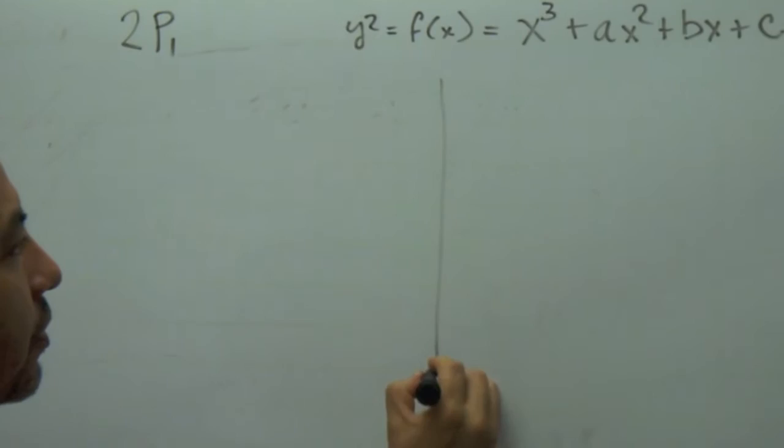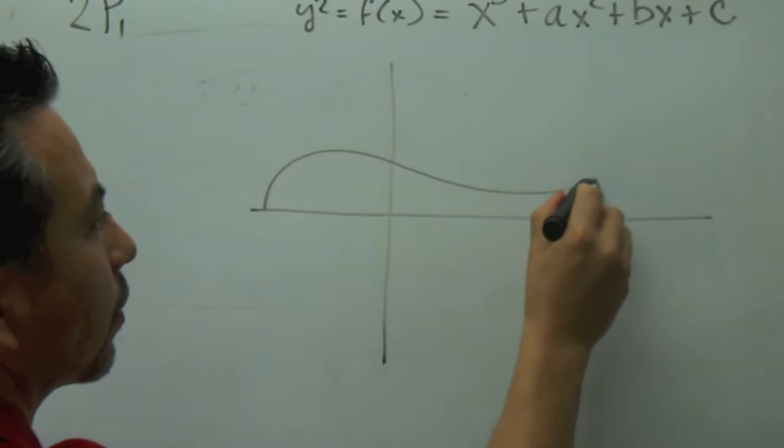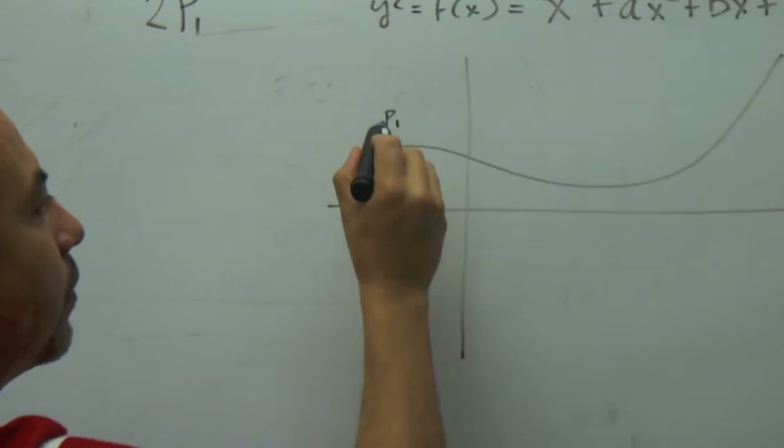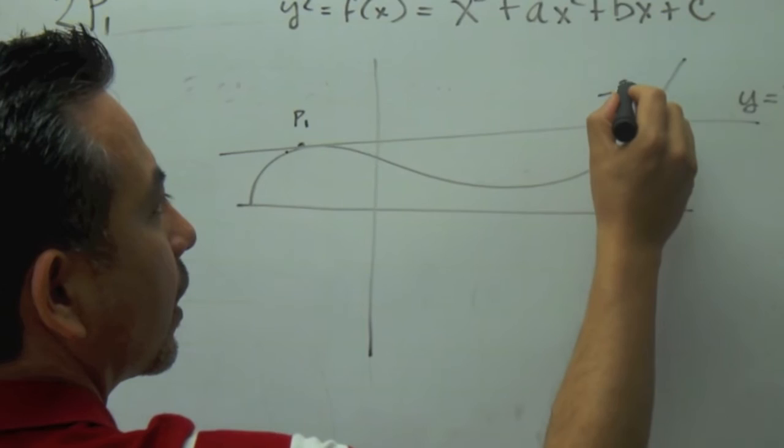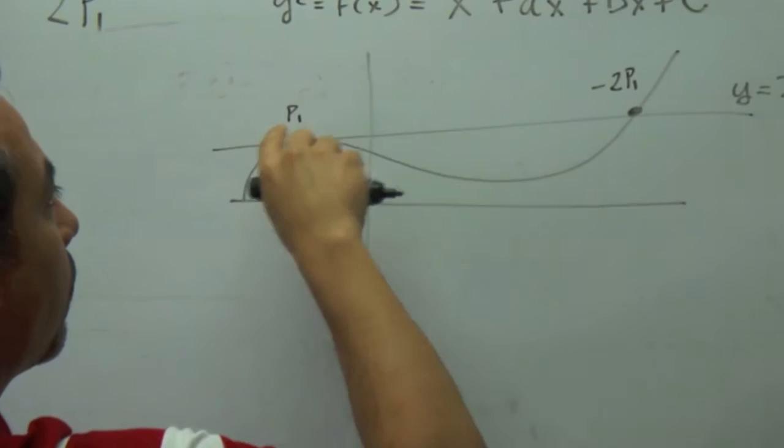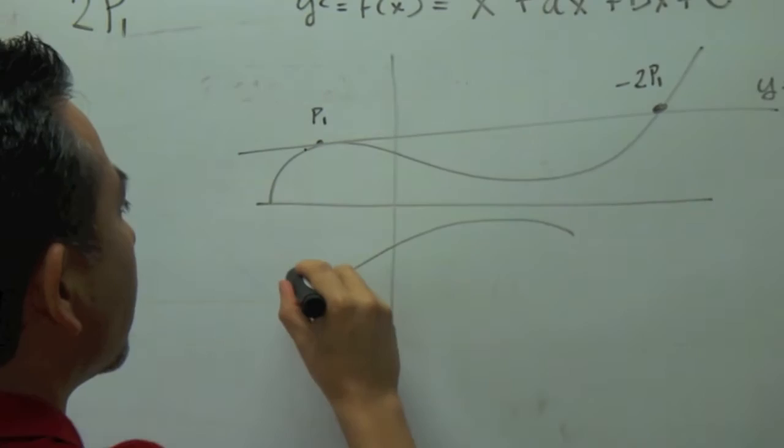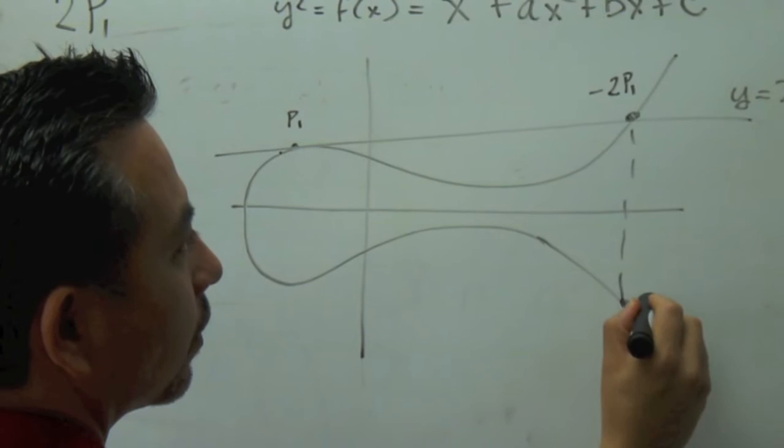So suppose that we have this curve, our classic curve, and we wanted to add this point to itself. So this is point 1. We draw a tangent line of the form y equals alpha x plus b, and then right here, this is the inverse of negative 2P1, because this is in the form of the square, so we have the negative part, which is something like this.